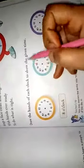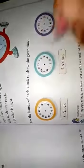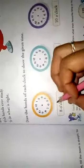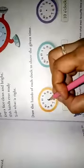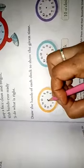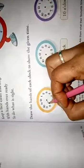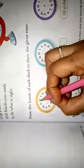Now come to here, draw the hand of each clock to show the given time. Now you have to make hands like this. 8 o'clock. First, the hand will be, short hand on 8 and long hand on 12.